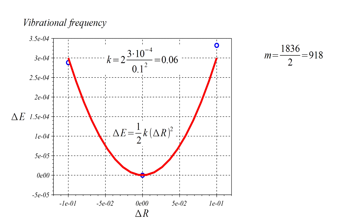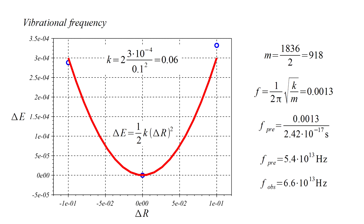The proton mass is 1836, and two objects connected by a spring oscillate at the same frequency as a single object of half the mass, or 918 atomic units. The formula for the vibration frequency of a mass on a spring is 1 over 2π times the square root of k over m equals 0.0013. Finally, converting from atomic to standard units, the predicted vibration frequency is 5.4 times 10 to the 13th cycles per second, or hertz. The observed value is 6.6 times 10 to the 13th hertz. And once again, the prediction of this very simple model is within about 25% of the actual value.